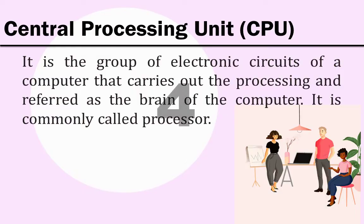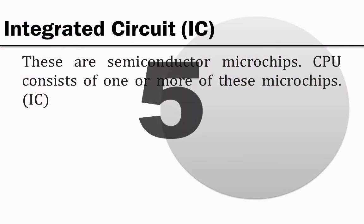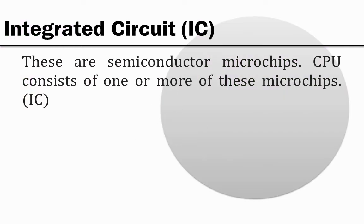Central Processing Unit, or CPU. It is the group of electronic circuits of a computer that carries out the processing, and is referred to as the brain of the computer. It is commonly called a processor. Integrated circuit, IC — these are semiconductor microchips, and the CPU consists of one or more of these microchips.